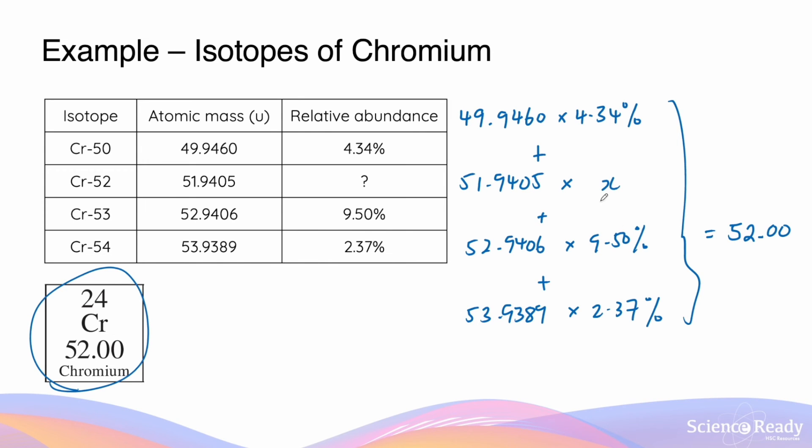We can rearrange this equation to make x the subject. We can move this term, this term, and this term to the right-hand side by subtracting them, and we'll get 51.9405 times x is equal to 43.5246.